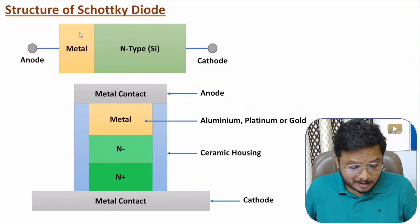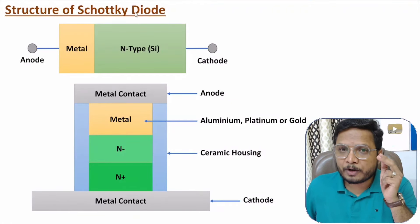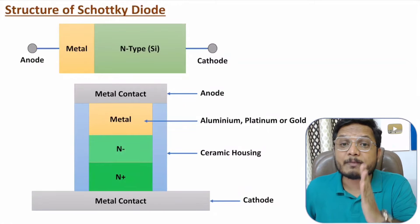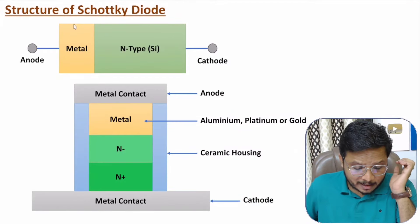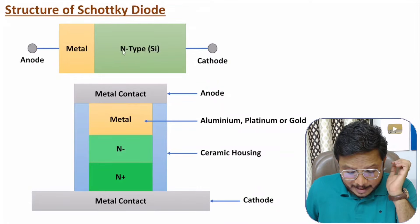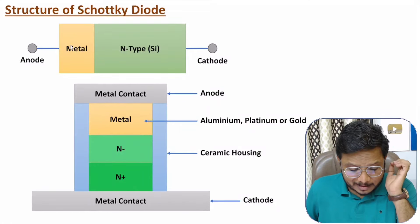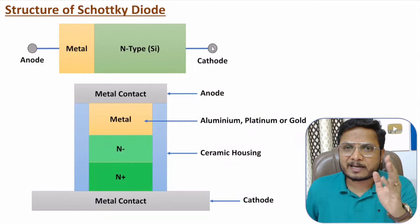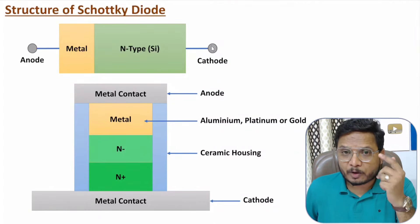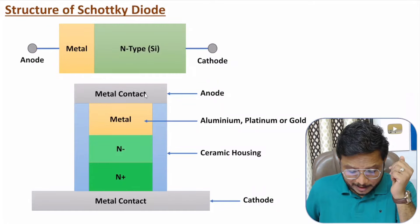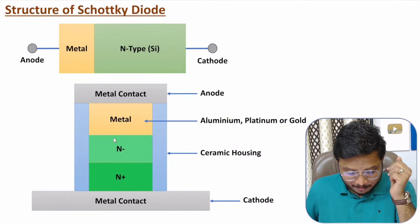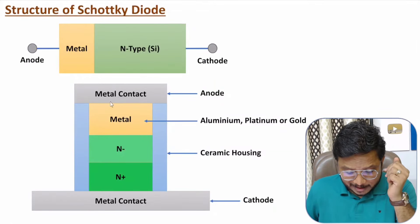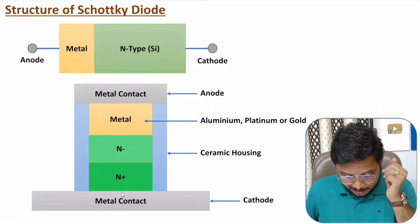Now I'll explain the structure of the Schottky diode. As mentioned, Schottky diode has a metal-semiconductor junction — here we have metal and here we have N-type semiconductor. The metal is connected with the anode and the N-type silicon is connected with the cathode. For microwave applications, a more detailed structure is shown where we again have metal and semiconductor forming the metal-semiconductor junction, with metal connected to the anode and semiconductor to the cathode.